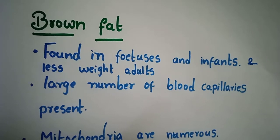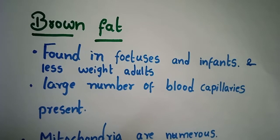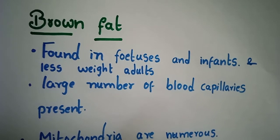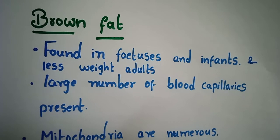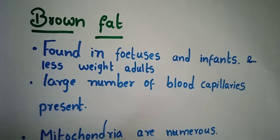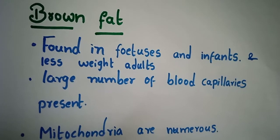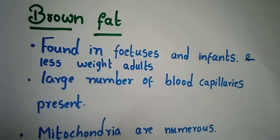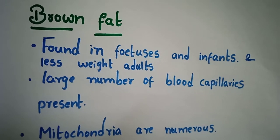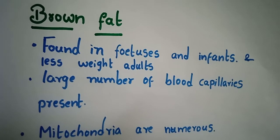A very good day to everyone. Welcome to Happy Learning. This is Kusma. Now we are going to learn about brown fat and white fat. Brown fat is characterized by leptin and white fat is characterized by UCP-1.